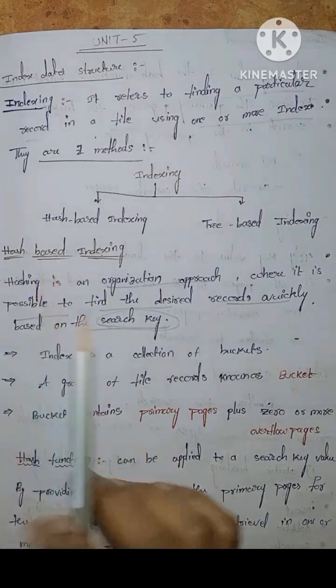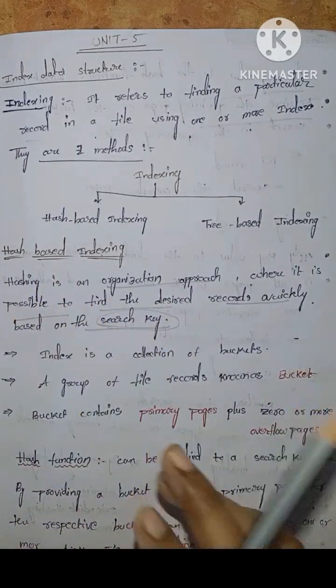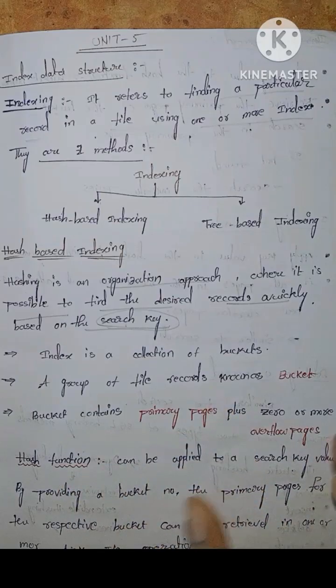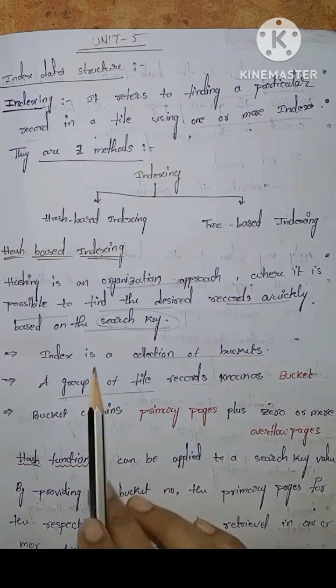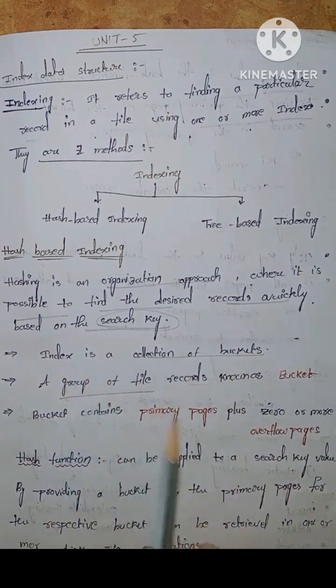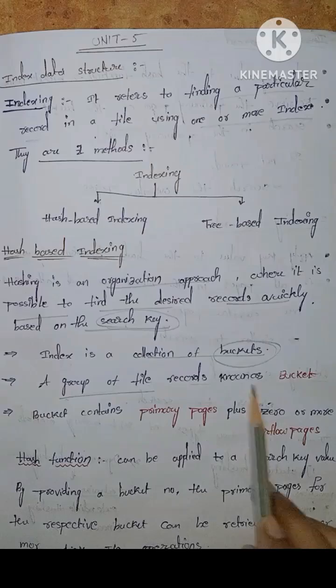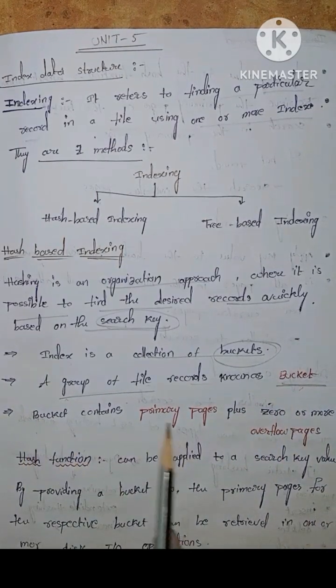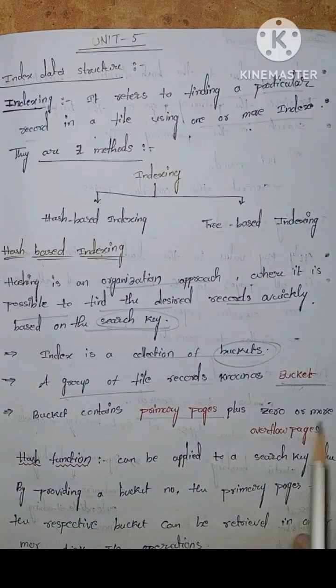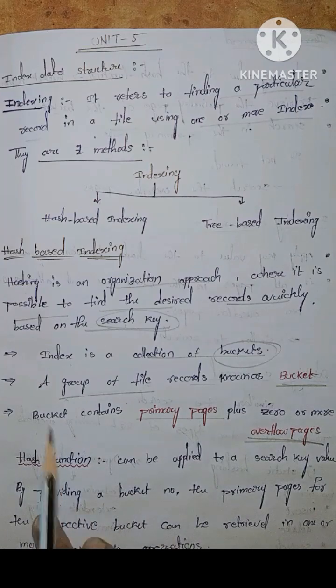In the hash table, we have to find out using such key. An index is a collection of buckets. The bucket contains a group of file records known as a bucket. A group of file save records. The bucket contains primary pages plus zero or more overflow pages. It contains primary pages and overflow pages.